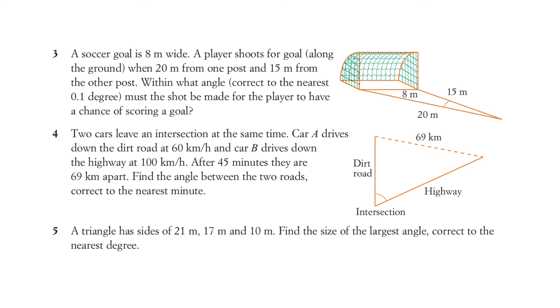Four. Let's have a look at the diagram. We've got 69 kilometres here. That's a dirt road, a highway, and intersection is here. Now, it looks like it's going to be that angle we're going to need to find. We've got that length, but we don't have these two. That's interesting.